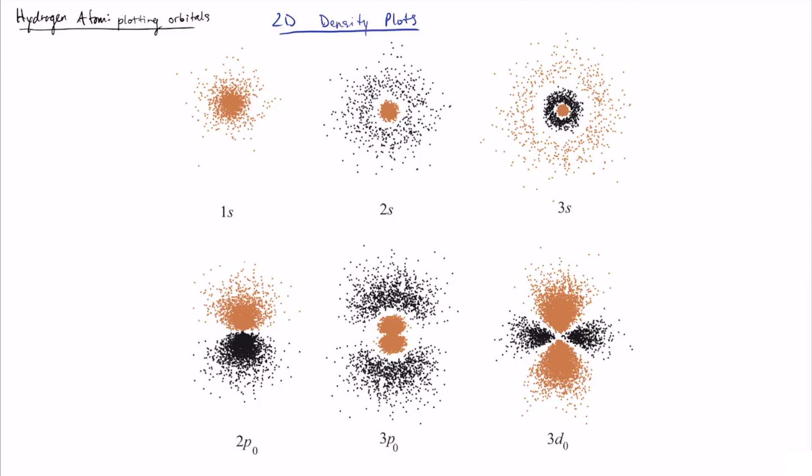Next, we're going to look at 2D density plots. And these take a slightly different tactic, but the idea is similar. Remember that we have the magnitude squared of the eigenfunction times the volume element gives us the probability of finding the particle in this small space enclosed by x to x plus dx, y to y plus dy, and z to z plus dz.